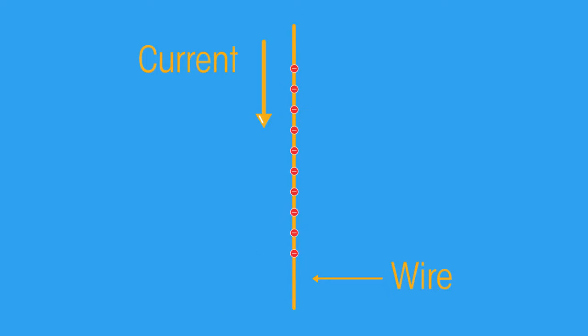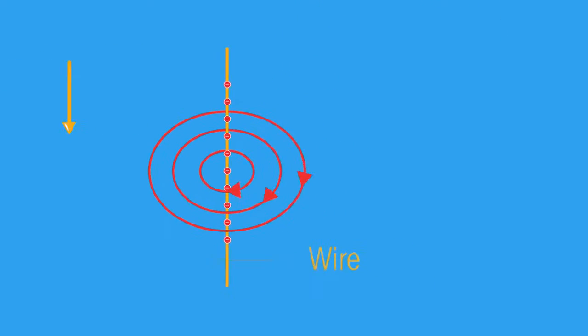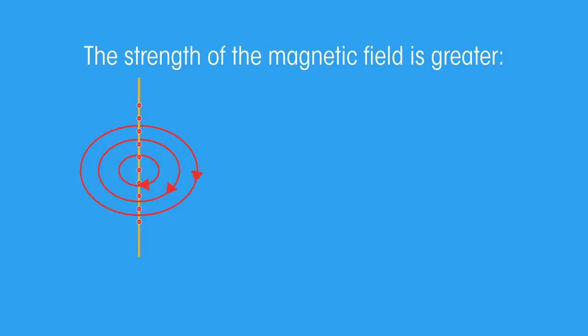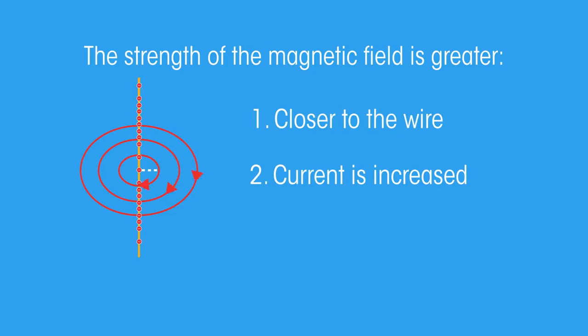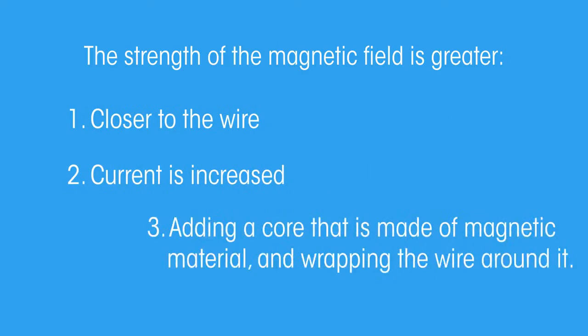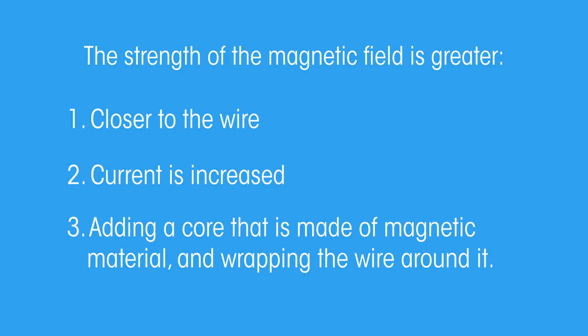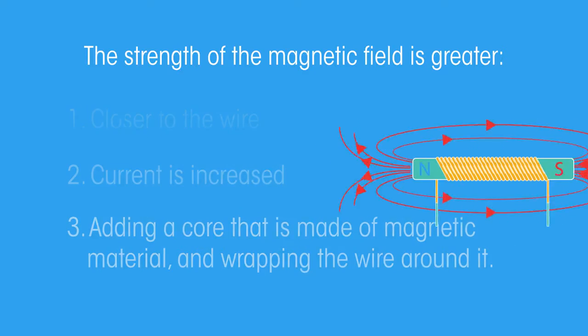When a current flows in a wire, it creates a circular magnetic field around the wire. The strength of the magnetic field is greater when it's closer to the wire, if the current is increased, or by adding a core that is made of magnetic material and wrapping the wire around it. This is known as a solenoid.